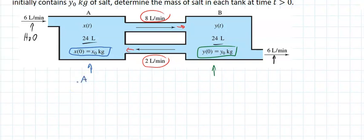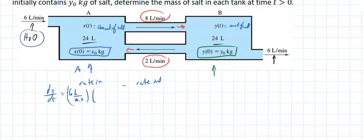If I look at tank A, x is the amount of salt or brine in the solution. Looking at the change of rate of salt in tank A, I want rate in minus rate out. We have 6 liters per minute coming in at a rate of zero kilograms per liter since it's water.